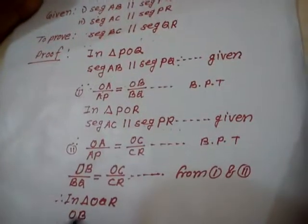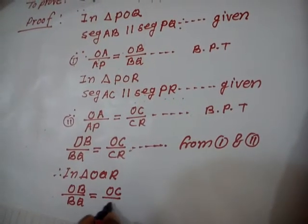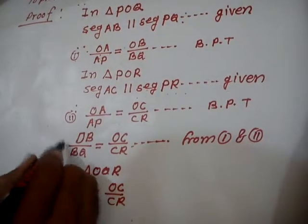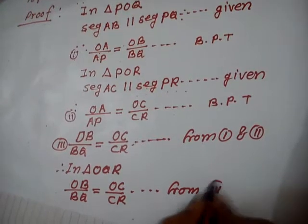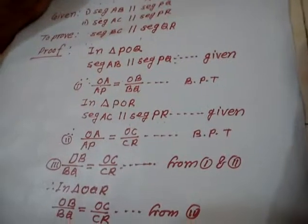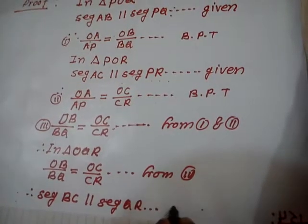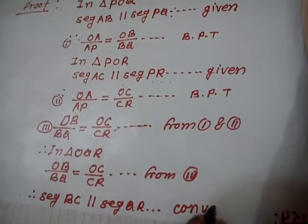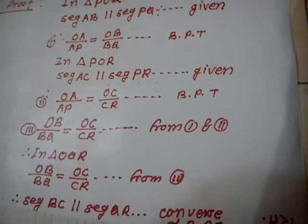From third, we will get, therefore, segment BC parallel to segment QR. Reason: Converse of BPT. Converse of BPT. Hence, proved.